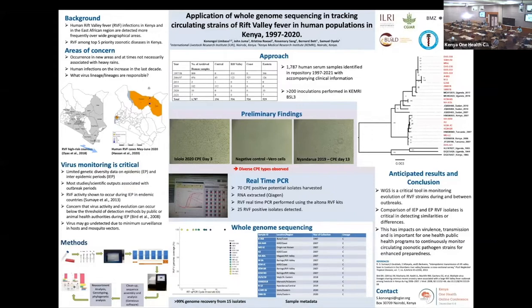Human RVF cases continue to occur and are being detected more frequently and over wider geographical areas in Kenya and the East African region, as highlighted in the maps below. In Kenya, RVF is listed among the top five priority zoonotic diseases and is reportable in both the human and livestock health sectors.